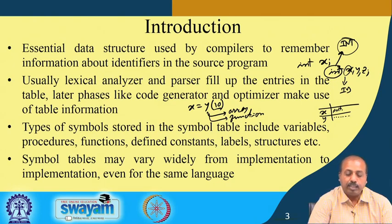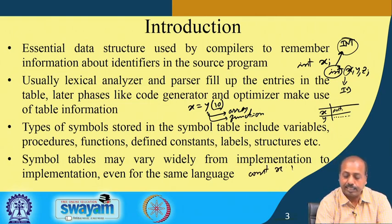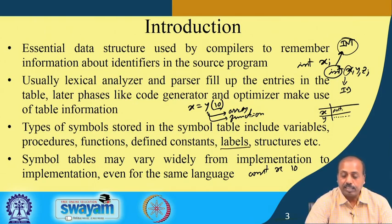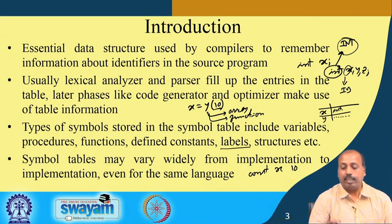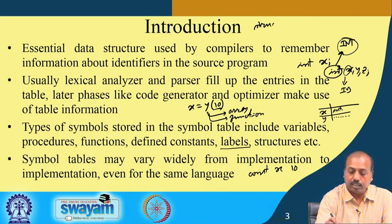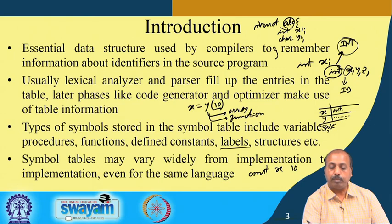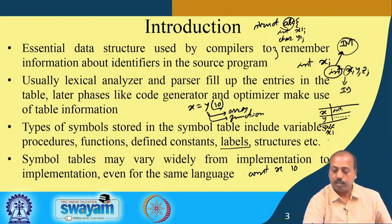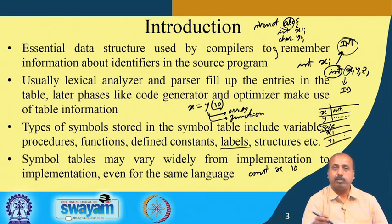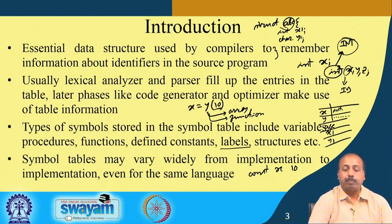Defined constants — such as 'constant x = 10' — are also stored in the symbol table. Labels are stored as well. Structures are also stored because they may have fields; for example, a structure 'abc' with fields 'int x1' and 'char y1'. The structure name abc needs to be stored in the symbol table, and its fields x1 and y1 are also stored with attributes identifying them as fields of structure abc.